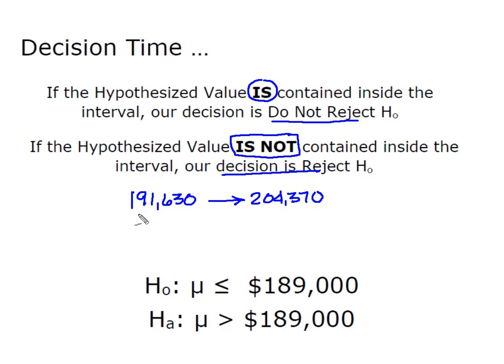Here are the two limits of my confidence interval that we just constructed: $191,630 on the low end, $204,370 on the high end. I look at my hypothesized value of the mean and we know that it's below that lower limit. Because the hypothesized value of $189,000 is not contained inside of our 95% interval our decision is to reject H0.